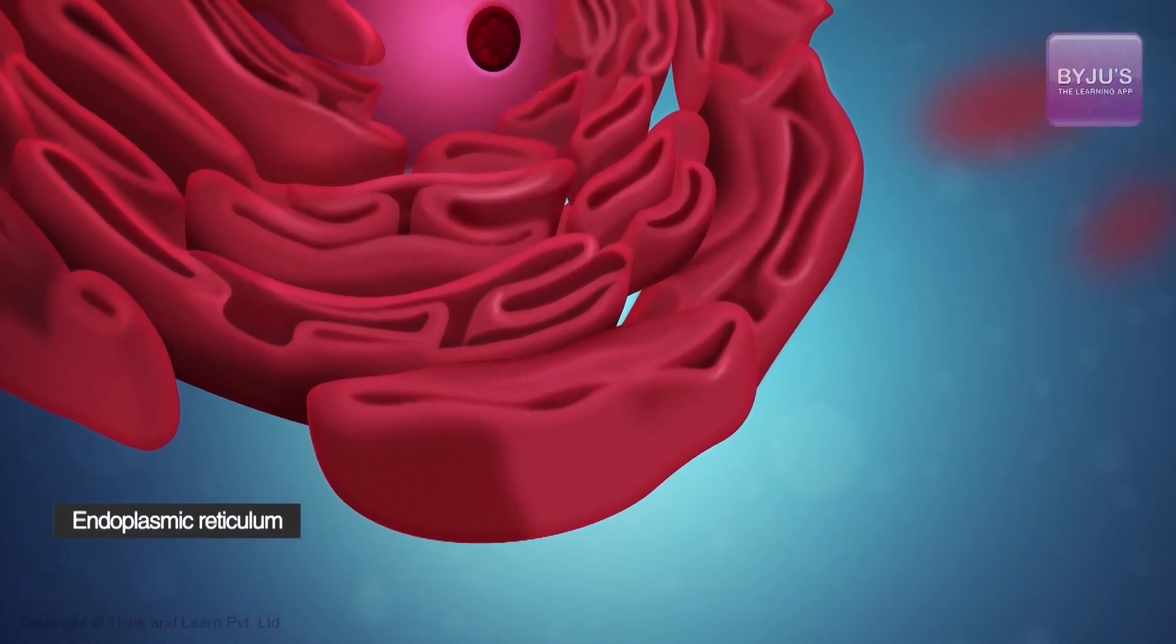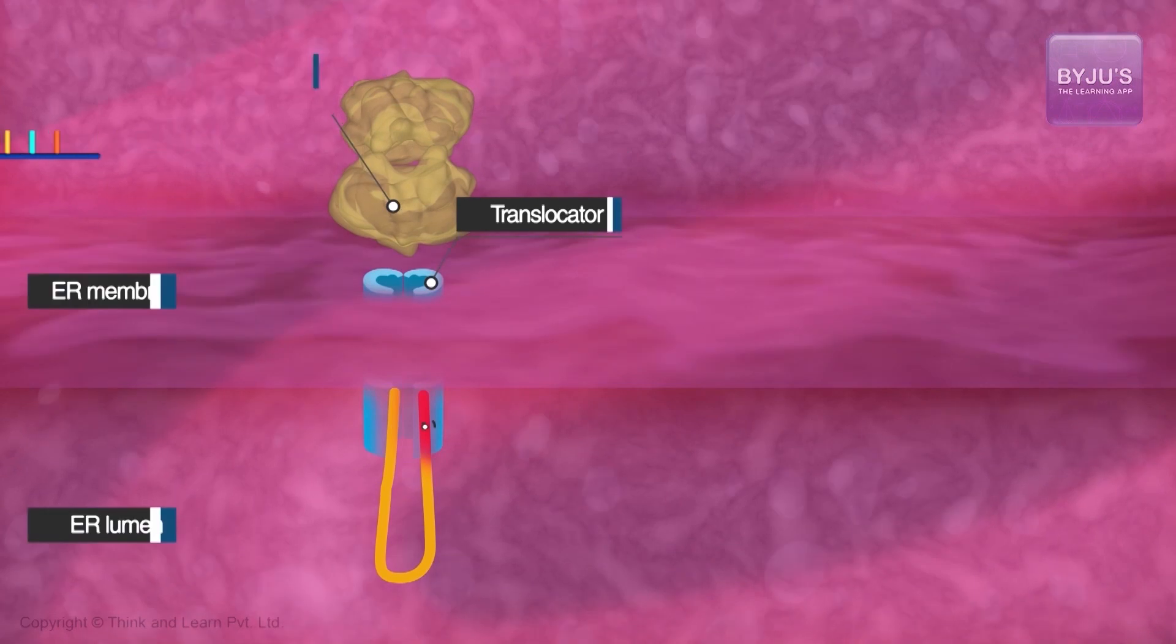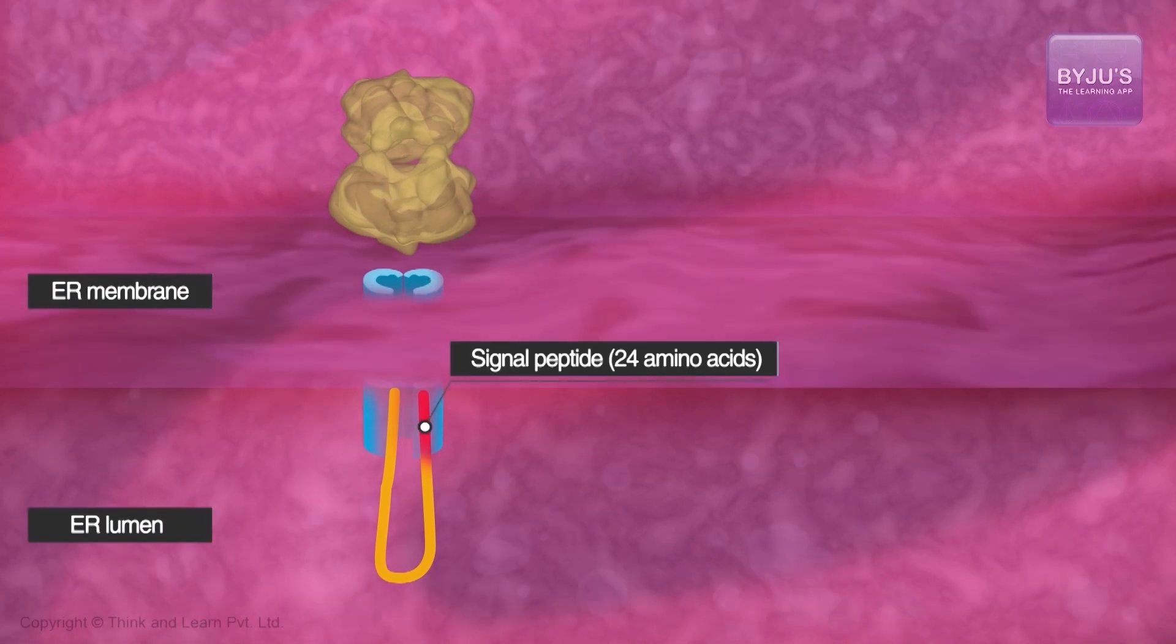The long-chained version is known as pre-pro-insulin. Like precursors of other hormones, it is also secreted into the endoplasmic reticulum.